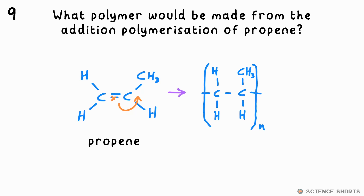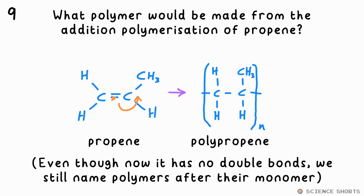The monomer is propene, so the polymer is just called polypropene — this one is also sometimes called polypropylene, but that's not important.